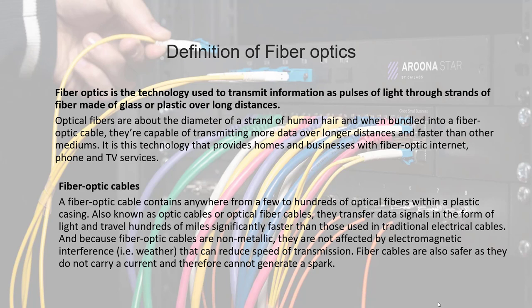Fiber Optic Cables. A fiber-optic cable contains anywhere from a few to hundreds of optical fibers within a plastic casing. Also known as optic cables or optical fiber cables, they transfer data signals in the form of light and travel hundreds of miles significantly faster than traditional electrical cables. Because fiber-optic cables are non-metallic, they are not affected by electromagnetic interference — for example, weather — that can reduce the speed of transmission.